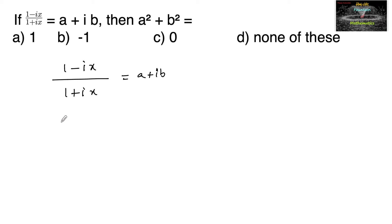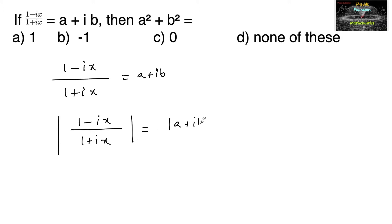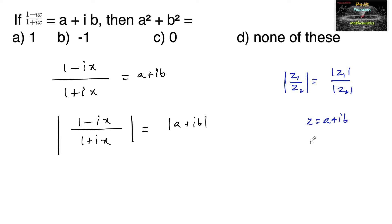Take modulus on both sides: modulus of (1 - ix) upon (1 + ix) is equal to modulus of (a + ib). Since modulus of z1 upon z2 equals mod of z1 upon mod of z2, and if z = a + ib then mod z equals root over a square plus b square.